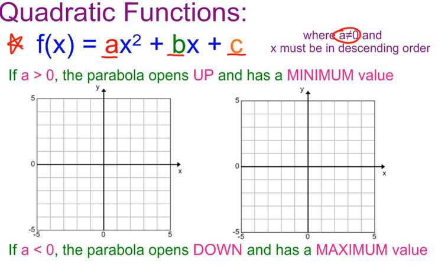One of the things that's unique about quadratic functions in standard form: if A is greater than zero, the parabola — which is what these make — goes up.